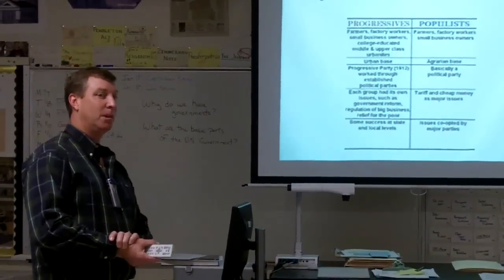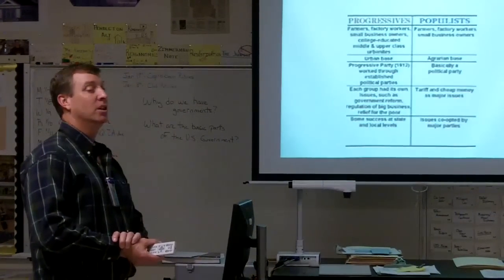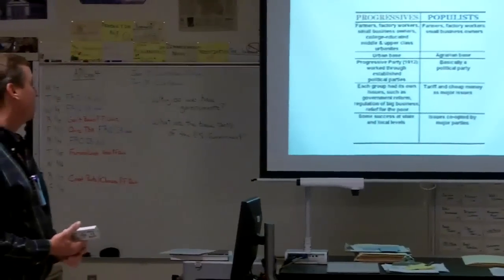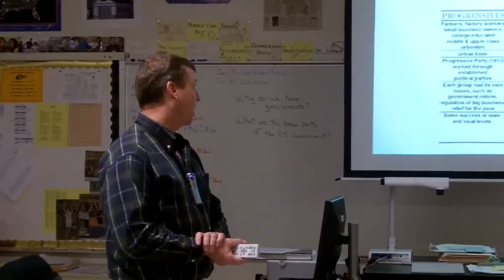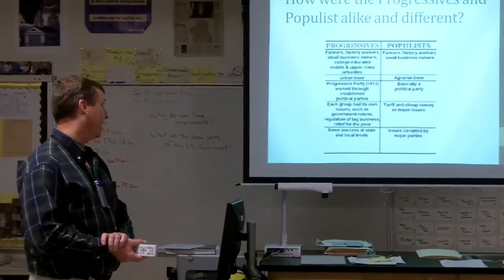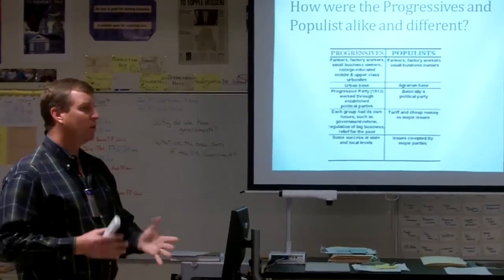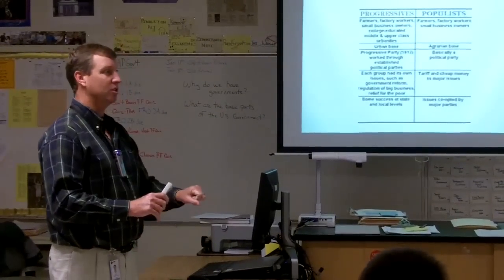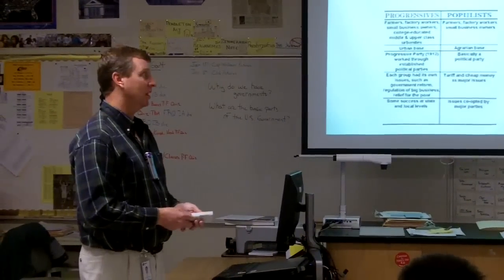We will have a progressive party. Our first candidate will be Teddy Roosevelt after he's been president. Our most famous progressive would be Robert LaFollette. Progressives had their own issues such as government reform, while the populists were dealing with tariffs, monetary policy, and bimetallism. Progressives had some success at state and local levels. The populist issues were co-opted by the major parties — Republicans and Democrats ended up stealing their issues — while progressives stayed longer, with states like Wisconsin electing more progressive leaders.